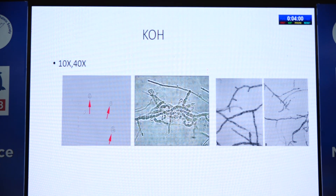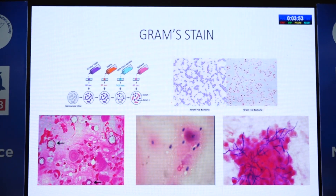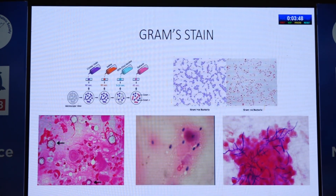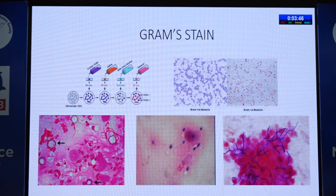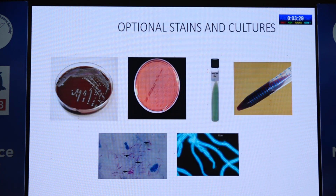On KOH you can see different organisms: fungal elements, acanthamoeba double-wall cysts. Pythium appears much broader compared to fungi with lesser septation. On gram stain, after following the proper staining protocol, you can see gram-positive and gram-negative bacteria. Acanthamoeba and microsporidia appear as a 'safety pin' appearance due to polar bodies. Nocardia appears as beaded filaments. In cultures, bacterial and fungal growth can be seen on SDA.